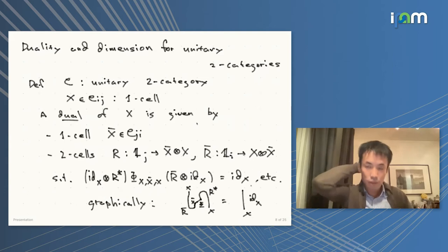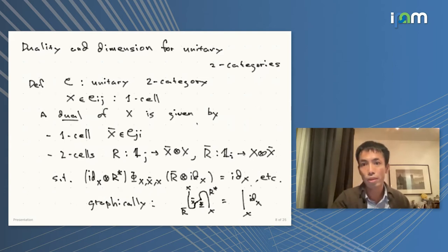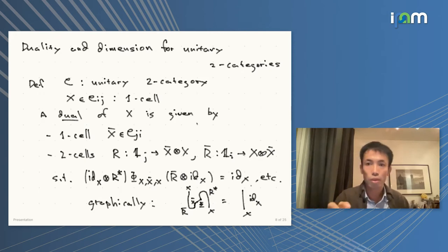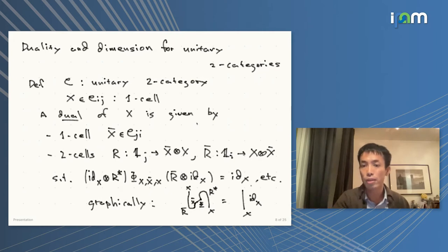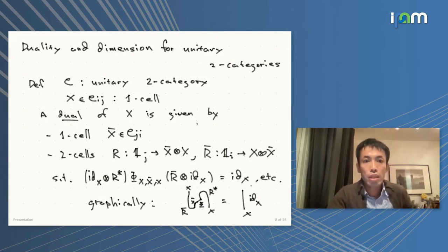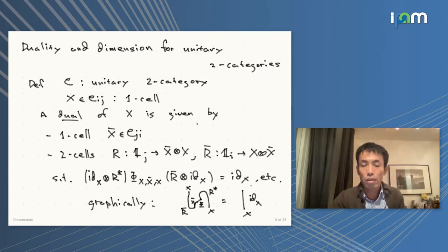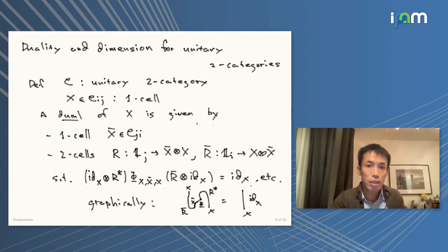Having looked at these concrete examples, let me go back to something more abstract. Unitary two-categories on their own are a bit too general because they correspond to something like semigroups, and we want something closer to groups. That's where duality comes into play, providing a nice framework for dimension theory on two-categories.